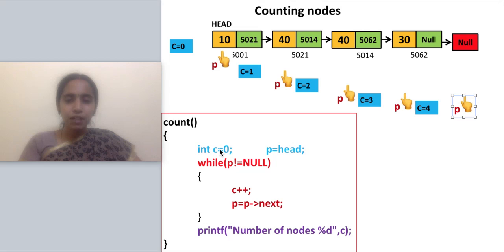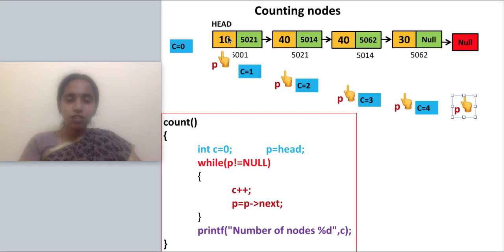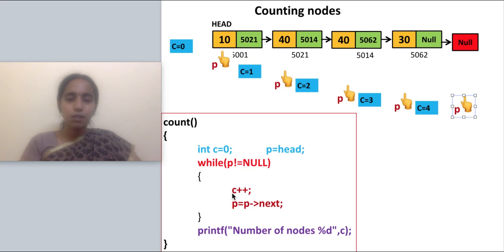Let us see the coding part. I declare a counter c equal to zero, and a pointer p equal to head — the pointer is initialized to the head of the linked list. While p is not equal to null, I increment c with c plus plus, then move p to the next node with p equal to p of next.